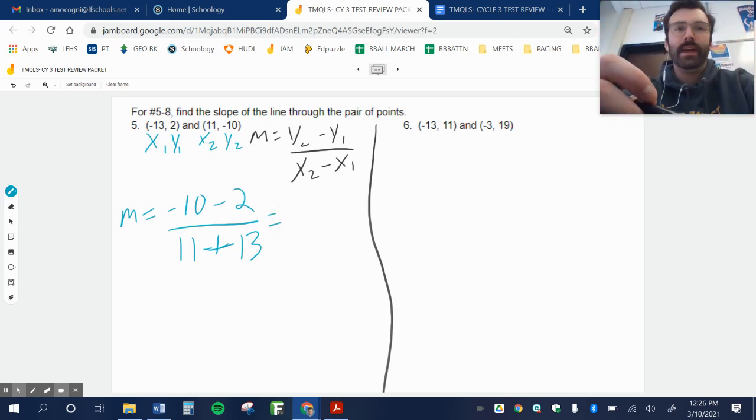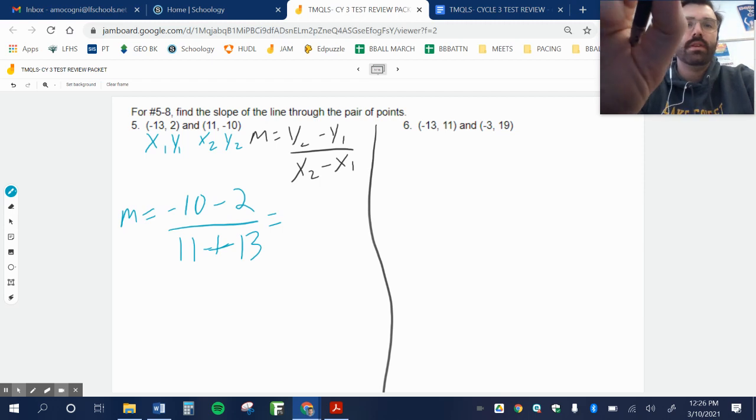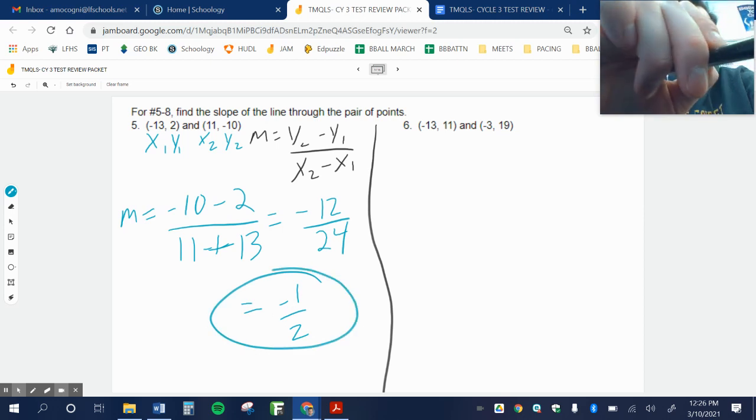All right. Negative 10 minus 2, negative 12. 11 plus 13, 24. So you get negative one-half. Always reduce, always reduce, always reduce.